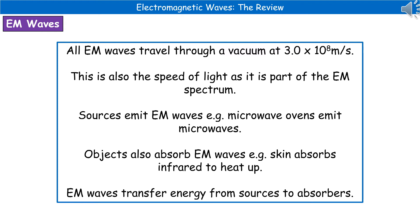Another term we may see associated with EM waves is the word source. A source is something that emits electromagnetic waves. For example, in your house you've probably got a microwave oven, and that's going to emit microwaves — it's a source. But objects can also absorb EM waves. Your skin, for example, will absorb infrared radiation, and that will heat it up. The key thing to remember is that EM waves are transferring energy from the sources to absorbers.